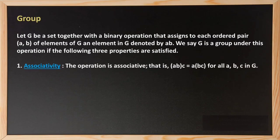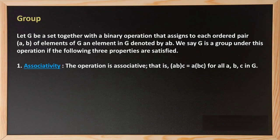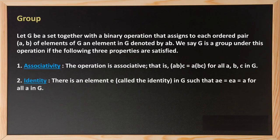Associativity property needs no explanation. If any set is closed, we check if associativity is satisfied — that is, (ab)c = a(bc). If this condition is satisfied, we say it is associative. Then we move on to the next property, which is identity.